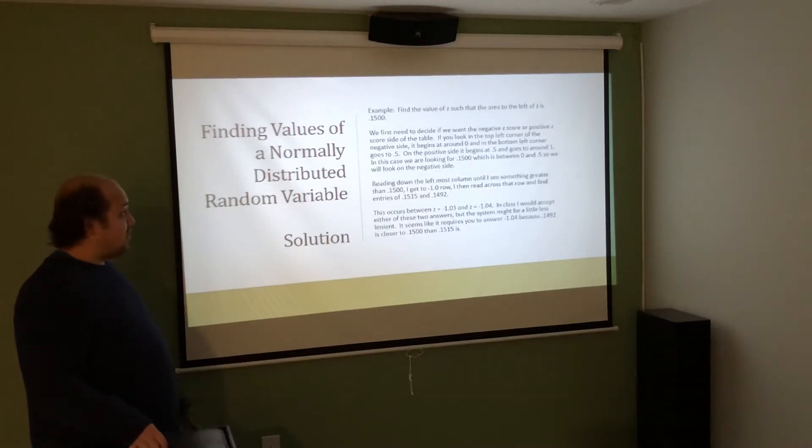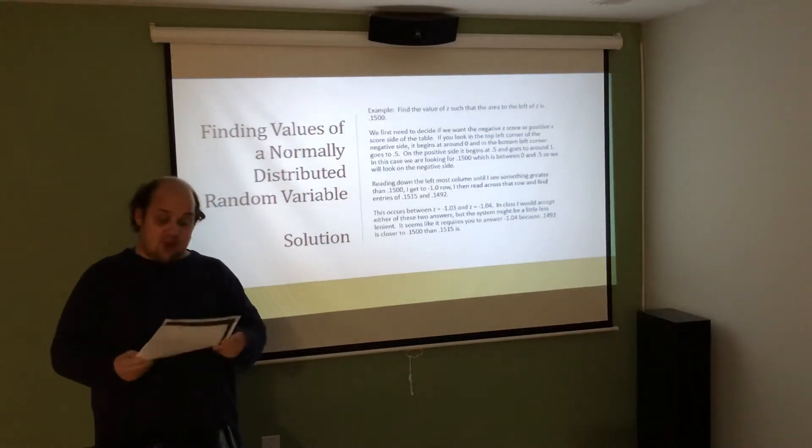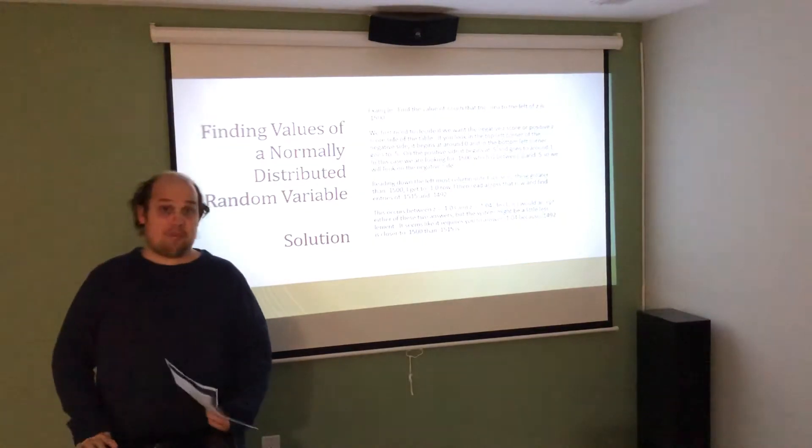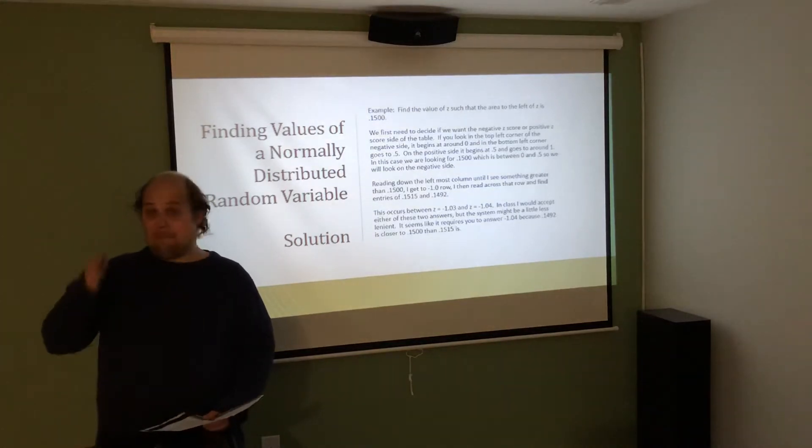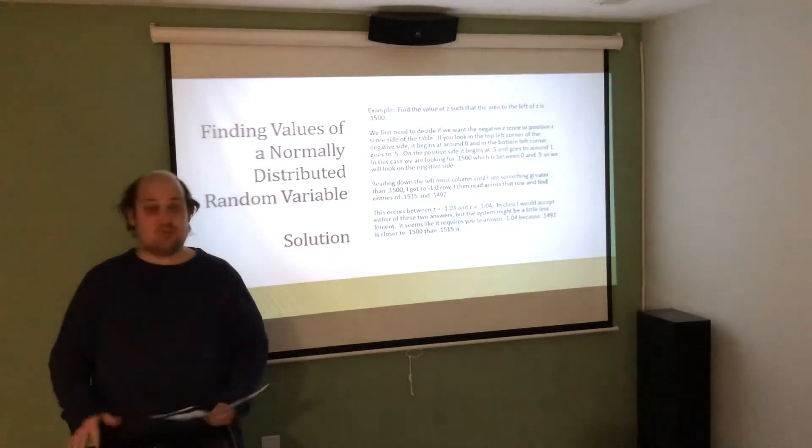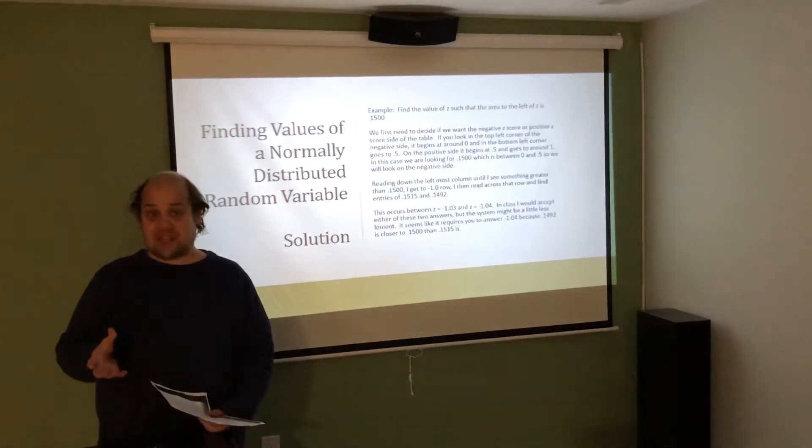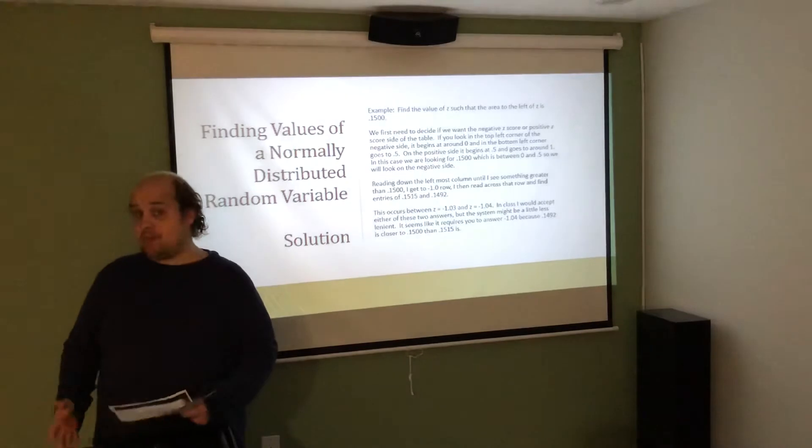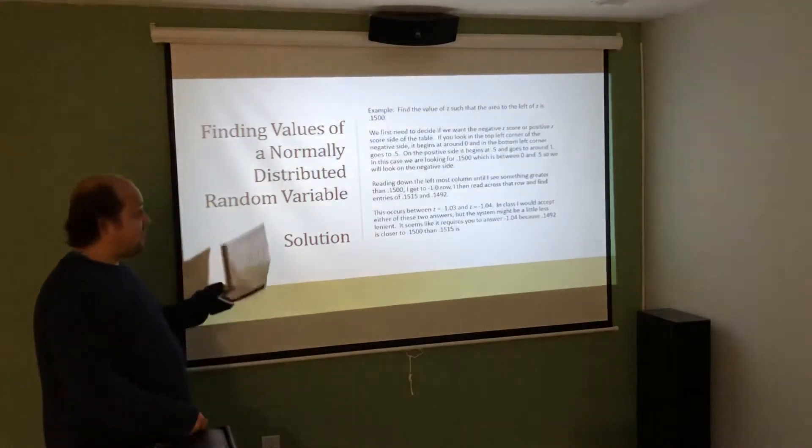So what we're going to do is first decide are we on the negative side or the positive side of the table. If I look at the table, because negative and positive are split down the middle where the mean, median, and mode are, 0.5 and less is on the negative side. More than 0.5 is on the positive side. Really, 0.5 itself is 0.00, so it's on both the negative and positive side. But if I have a probability less than 50%, I should be looking on the negative side. If I have a probability greater than 50%, I should be looking on the positive side. Here, we're looking for the 15th percentile.